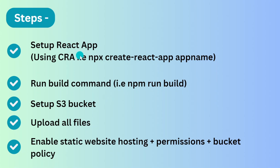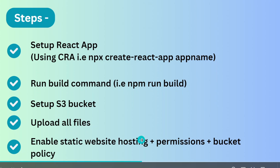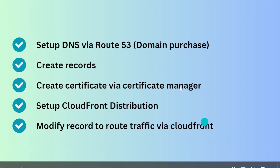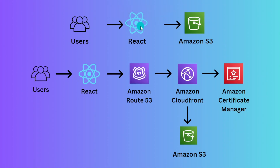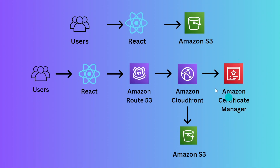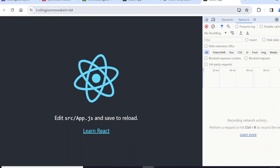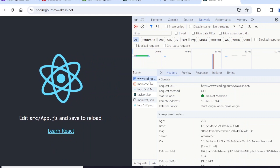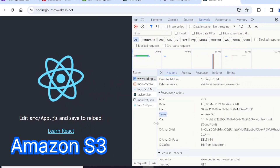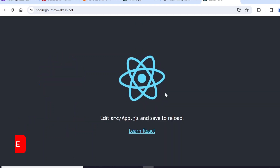Opening our custom domain in incognito — it opens successfully with HTTPS and the connection is secure. To summarize the full steps: set up the React app using CRA, run the build command, set up S3 bucket with file upload, static website hosting, permissions and bucket policy, set up DNS via Route 53 and created records, set up a certificate via Certificate Manager, set up CloudFront distribution, and modified the record to route traffic via CloudFront. If you have learned something new, don't forget to like, share, and subscribe. Thank you for watching.